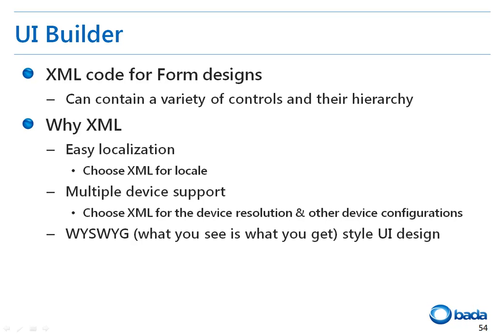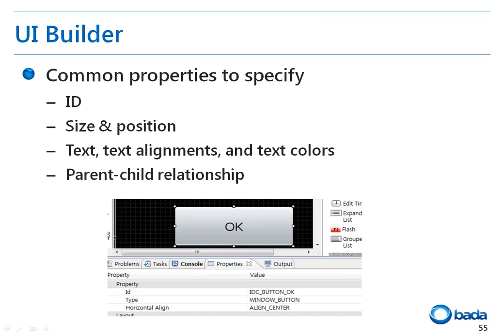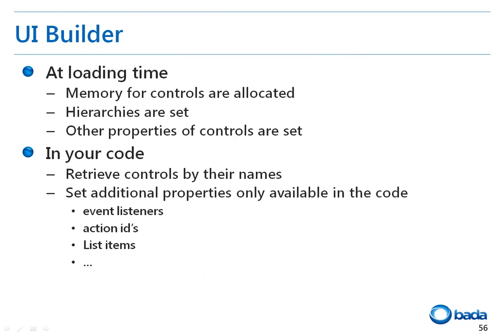Finally, you can design more beautiful and sophisticated UIs through the what-you-see-is-what-you-get interface. The following common properties can be set when you use the UI Builder: the object ID, which is an important property for accessing the control from within the source code; the size and position of the control on a form; as well as the text, text alignment, and text color. In addition, you can define the parent-child relationship. When the XML format UI file is loaded, memory is allocated to each of the controls in the XML file and the hierarchy of the controls is set, and the properties specified in the XML file are applied to the corresponding controls.